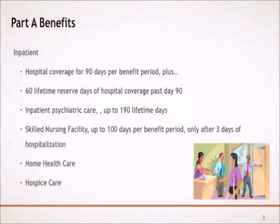A benefit period begins the day you go into the hospital or skilled nursing facility. The benefit period ends when you have not received any inpatient hospital or skilled nursing facility care for 60 days in a row. If you go into a hospital or skilled nursing facility on day 61 or later, a new benefit period starts. You would be responsible for the inpatient hospital deductible for each new benefit period. There is no limit to the number of benefit periods. Benefit periods are not on a calendar year.